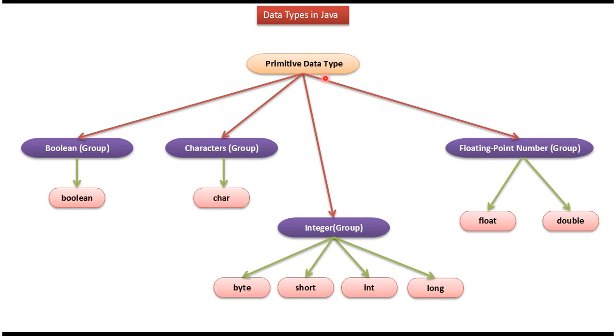Primitive data type has four groups. The first group is boolean group. It has boolean data type and the second group is characters group. It has character data type and the third group is integer group.